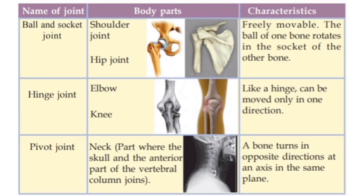Hinge joint — found at the elbow and the knee. Like a hinge, it can be moved only in one direction.